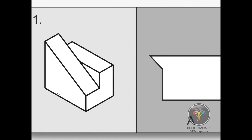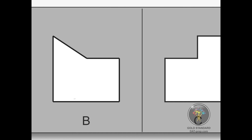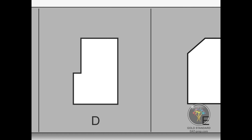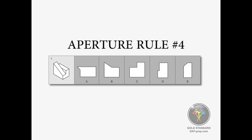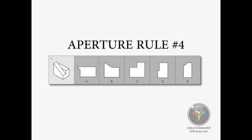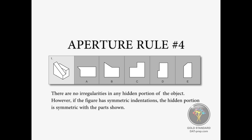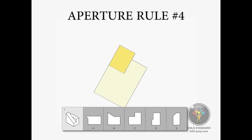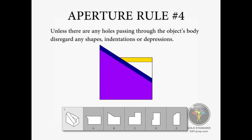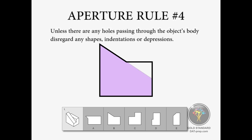Then you can try to determine the correct keyhole for that 3D object by focusing mainly on the outlines of these three views. This is how aperture rule number 4 applies, where it says there are no irregularities in any hidden portion of the object. However, if the figure has symmetric indentations, the hidden portion is symmetric with the part shown. Unless there are any holes passing through the object's body, disregard any shapes, indentations, or depressions.